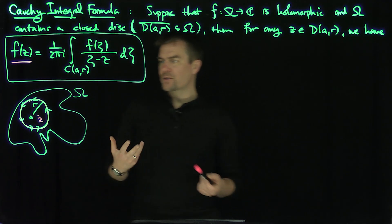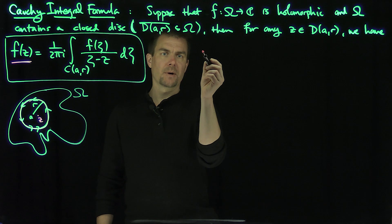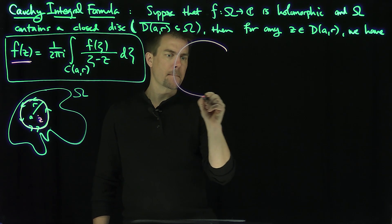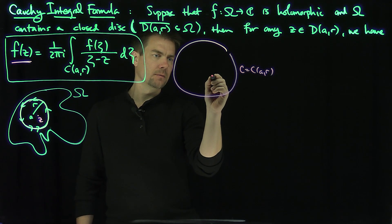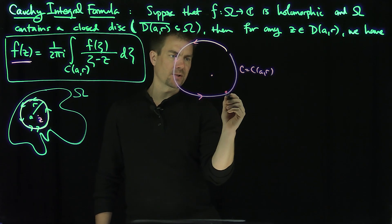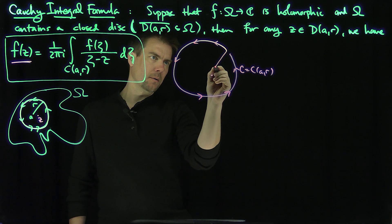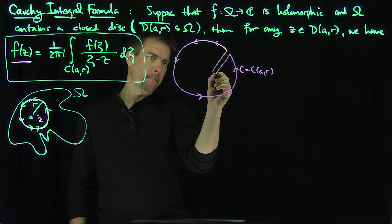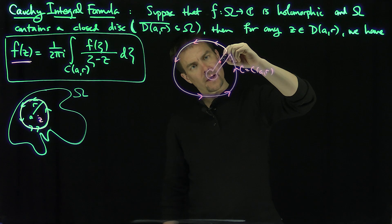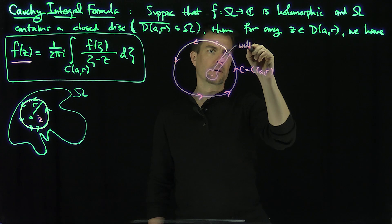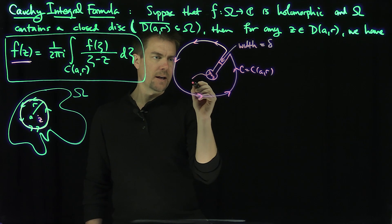So how do we prove something like this? We're going to focus on this circle and use the fact that a holomorphic function has a primitive on very simple regions. What we'll do is the following. Here's my circle C(A, R), oriented anti-clockwise. I'm going to punch out a little narrow corridor of uniform width. I'll draw a corridor and a tiny circle around the point z. The width of the corridor will be called delta, and the radius of the small circle around z will be called epsilon.